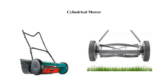You can see here the cylindrical mower and how the helical spiral-shaped blades are attached to its periphery. It moves and cuts along the grass, cutting down the grasses.